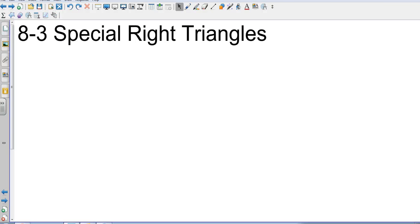Geometry, Chapter 8, Section 3, Special Right Triangles. We're going to talk about two special right triangles, the 45-45-90 and the 30-60-90.